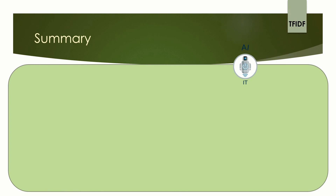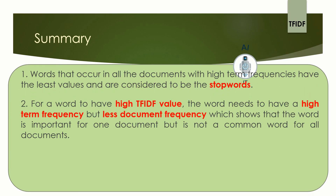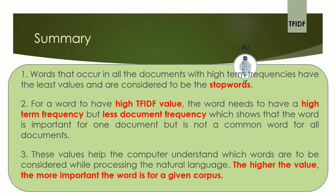To summarize: words that occur in all documents with high term frequencies have very less values and are generally the stop words. For a word to have a high TF-IDF value, it needs to have a high term frequency but less document frequency, meaning it should not occur in all documents. This shows that the word is important for one document but is not a common word for all documents. These values help the computer understand which words are to be considered while processing natural language. The higher the value of a word, the more important it is for a given corpus.